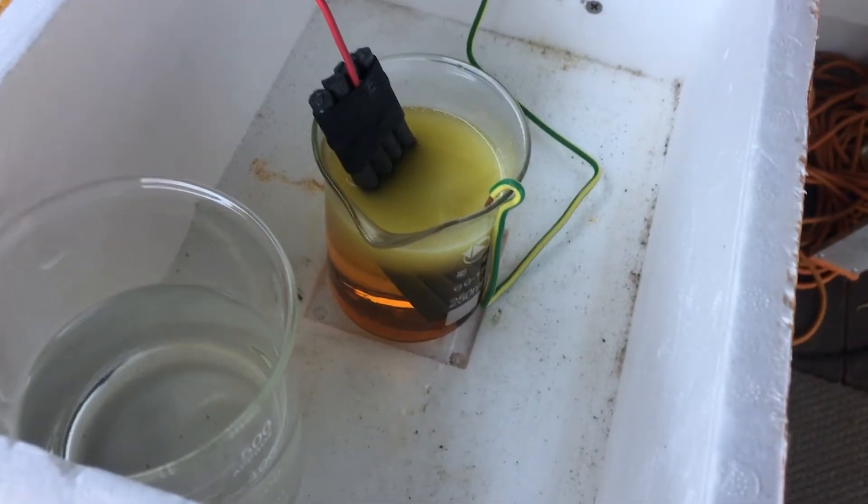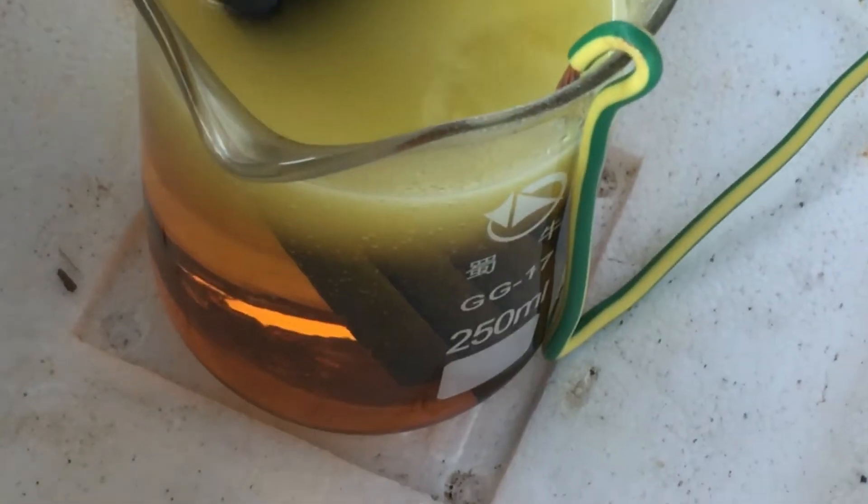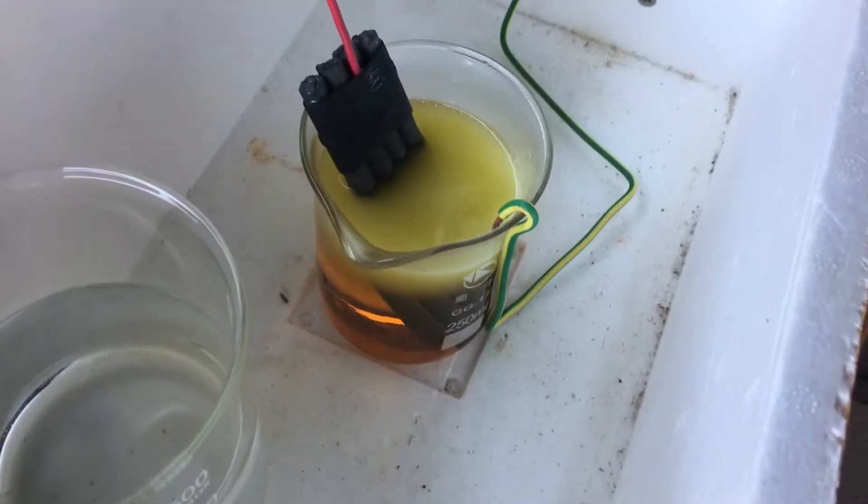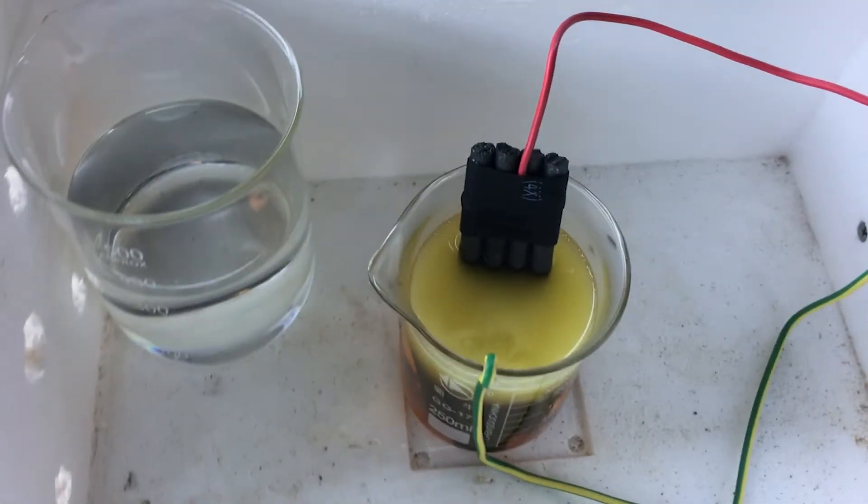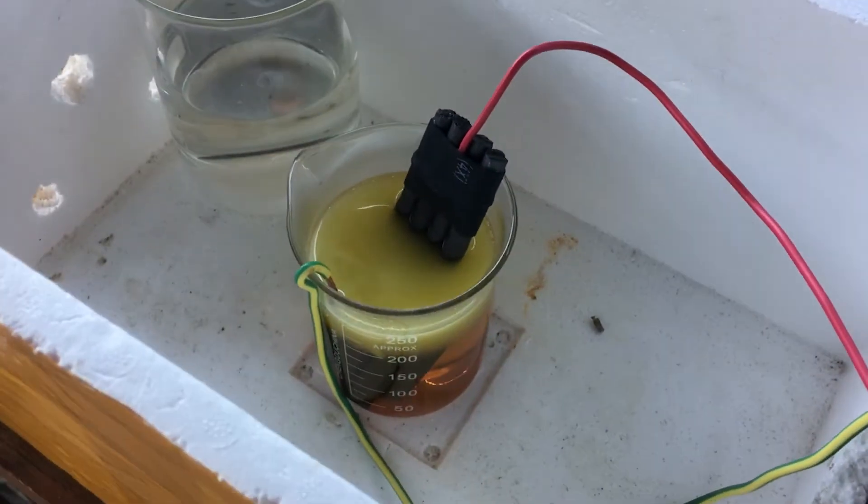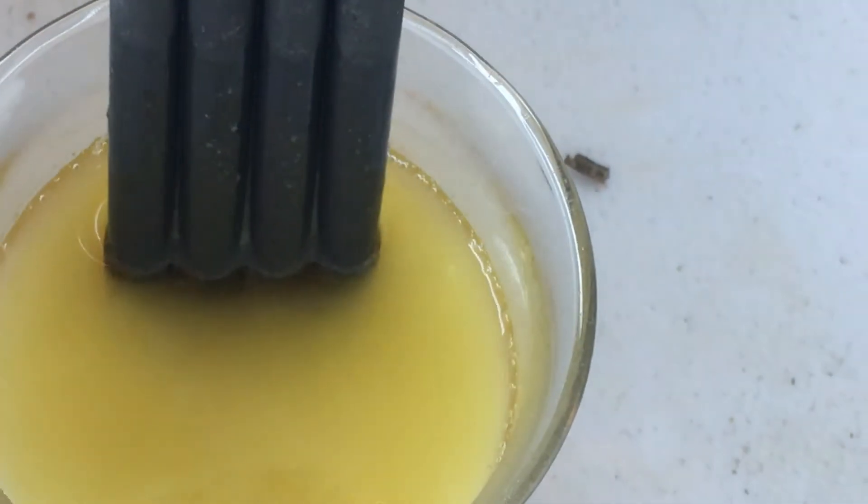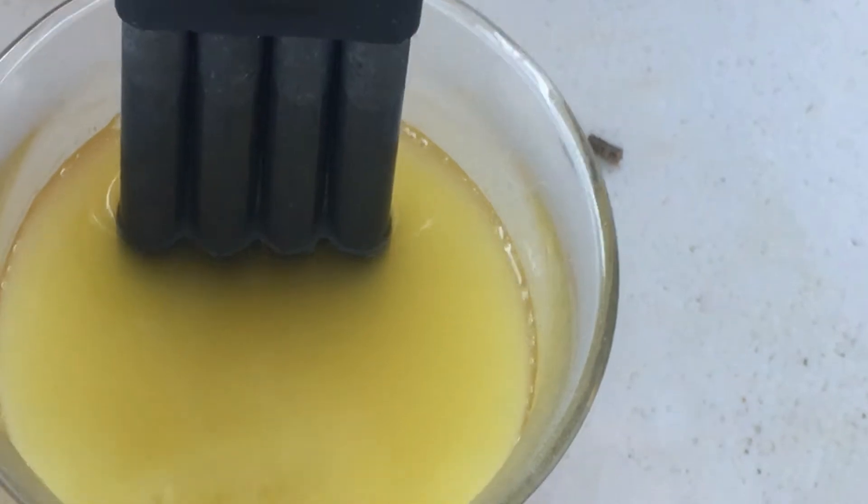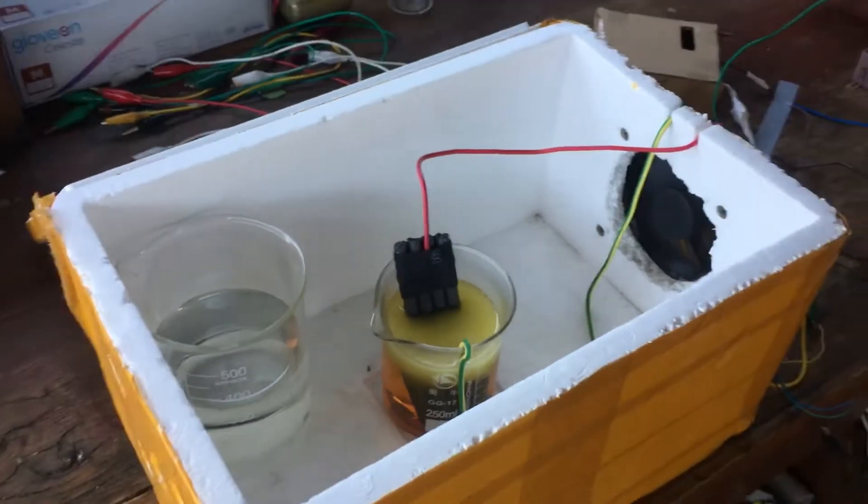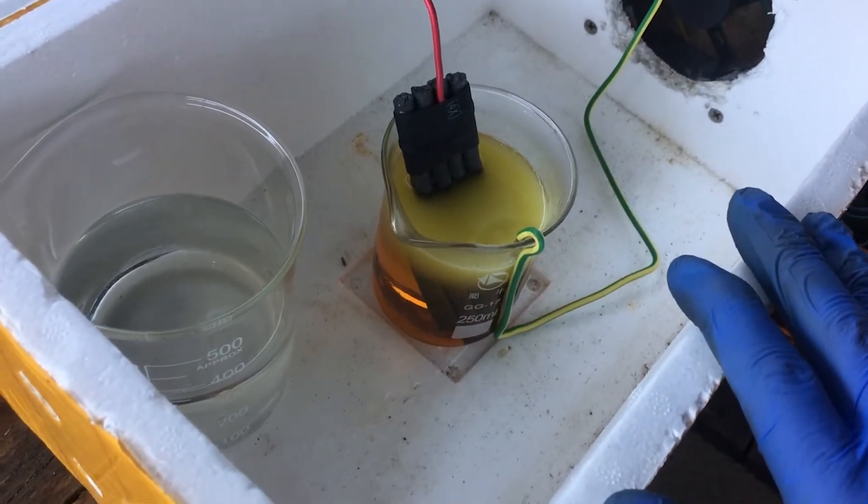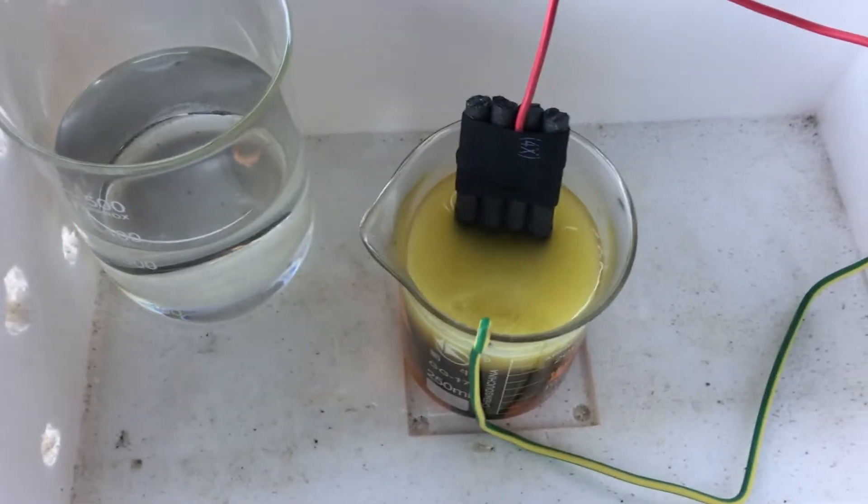One other thing to note at this stage is the fact that the graphite electrodes really seem to be holding up really well. I was expecting them to kind of fall apart, even just a little bit by this stage, but as you can see there, they look pretty much untouched so far. We'll see how well they'll hold up for the rest of the run, but hopefully they'll do a good job.